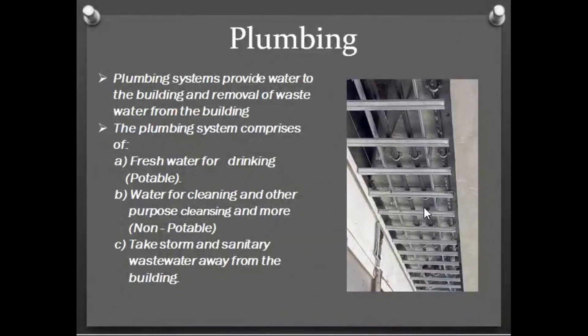This is the plumbing system. Fresh water is supplied to the building — fresh water is our drinking water, that is potable water. We can use all levels of water. We can use non-potable water — it is for cleaning purposes: cleaning, bathroom, toilet or irrigation. This is water for cleaning. The third one is storm water. The drainage system is the main storm water system. The sanitary waste water system.